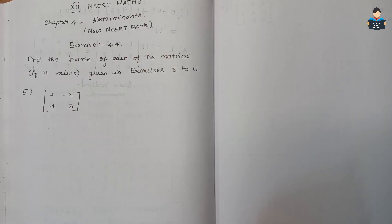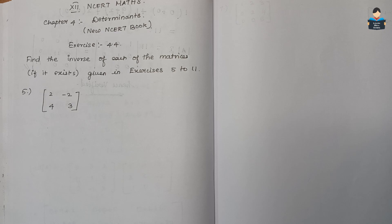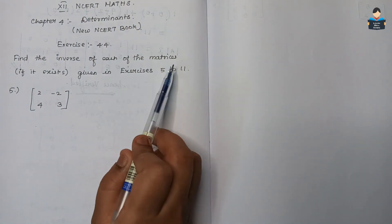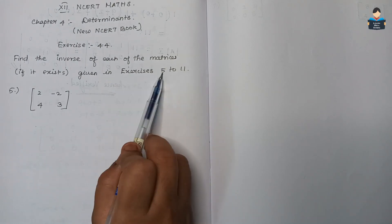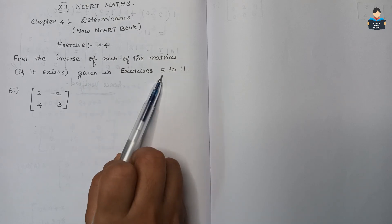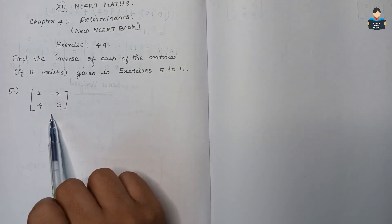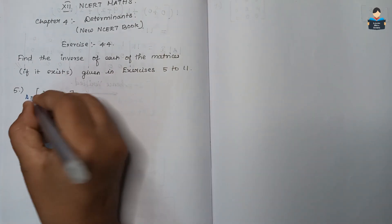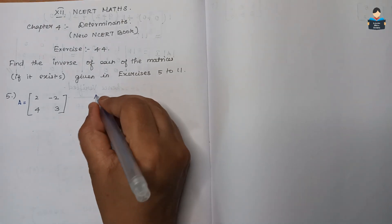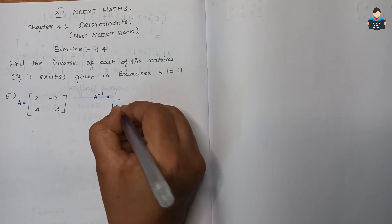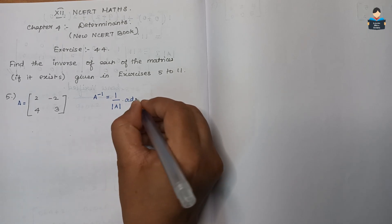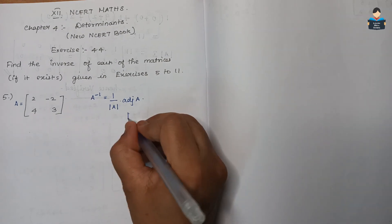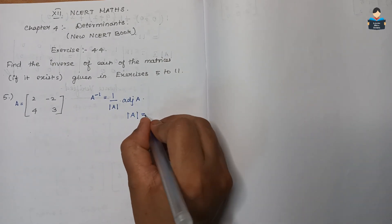Hello everyone, welcome to the channel. In this video, we solve Class 12 NCERT Math Chapter 4 Determinants, Exercise 4.4, questions 5 to 11 — find the inverse of each of the matrices if it exists. The formula is: A inverse equals 1 by determinant of A into adjoint of A. First, the determinant of A should not be equal to 0.